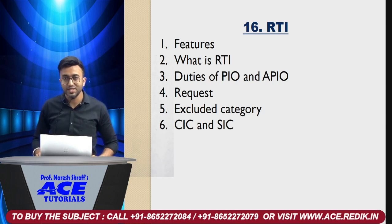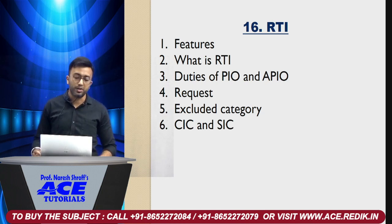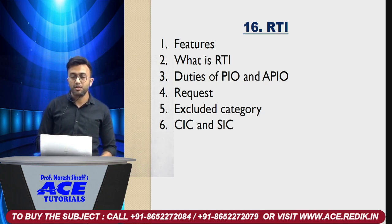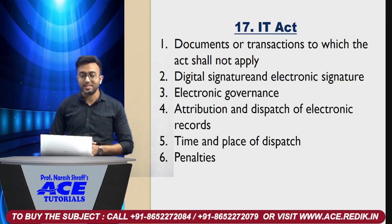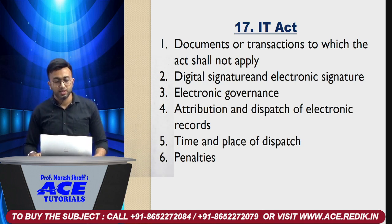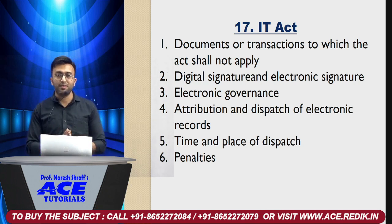Then, RTI — again one of the easiest chapters in the entire JIGL syllabus. Topics include: features, what is RTI, duties of PIO and APIO, how to make a request — the answer comes within 30 days, in some cases 35 days, and in certain cases 40 days — cover all those points. Then, excluded categories: what information will not be given. Attribution and dispatch of electronic records, time and place of dispatch, and lastly, penalties. These are the important questions in the RTI chapter.